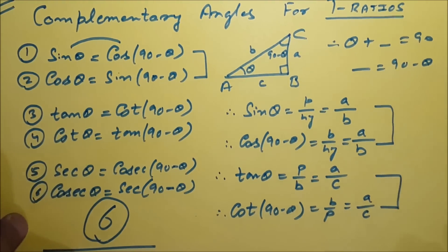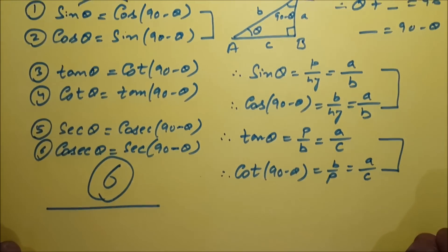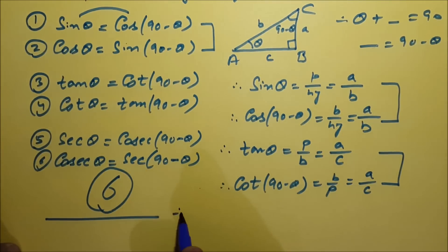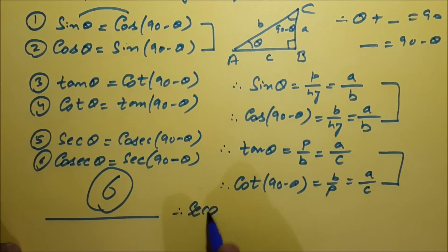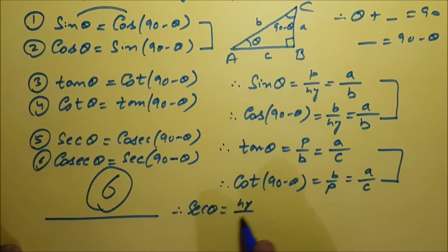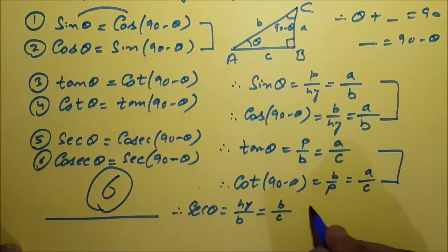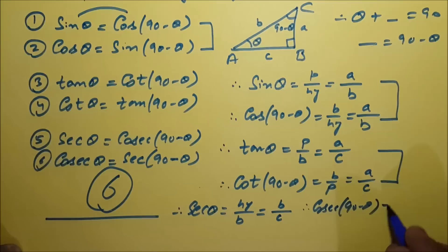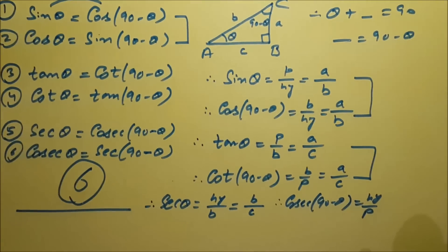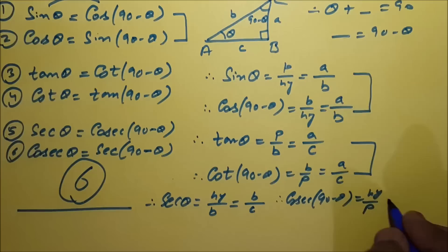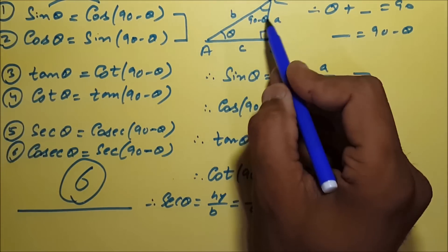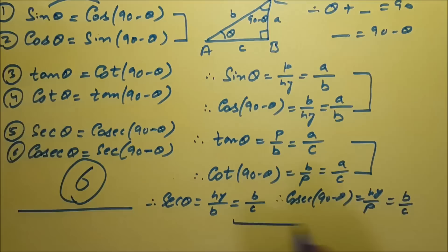You can prove the same thing for secant and cosecant. Sec theta is hypotenuse upon base — hypotenuse is B and base is C, giving B over C. For cosec(90 minus theta), the formula is hypotenuse upon perpendicular. In this triangle, hypotenuse is B and for angle 90 minus theta the perpendicular is C, giving B over C — and they are the same.